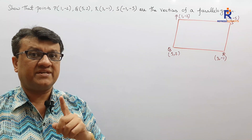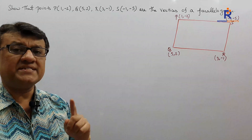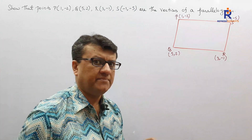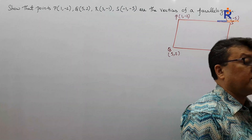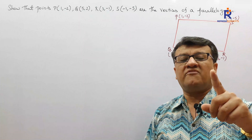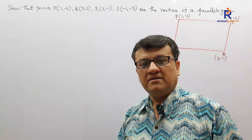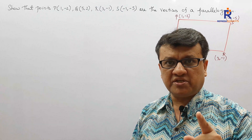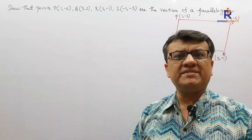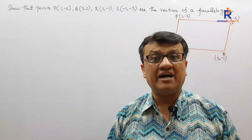What is the definition of a parallelogram? I don't want the properties — I want the definition. Both pairs of opposite sides of a quadrilateral, if they happen to be parallel, then the quadrilateral is a parallelogram. A parallelogram is that quadrilateral in which both pairs of opposite sides are parallel.